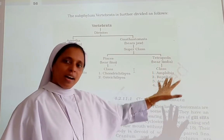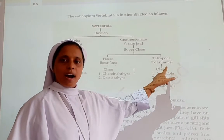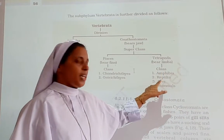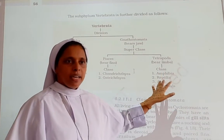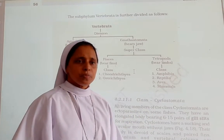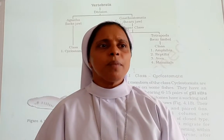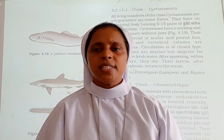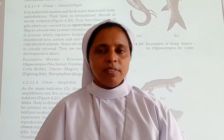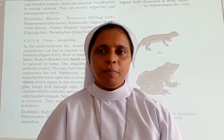The mnemonic is ARAM: A for Amphibia, R for Reptilia, A for Aves, and M for Mammalia. We have also seen Cyclostoma, Chondrichthyes, and Osteichthyes. Now we will study Class Amphibia.